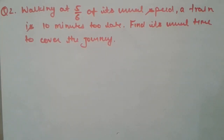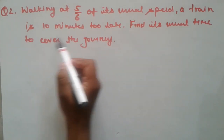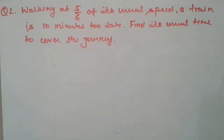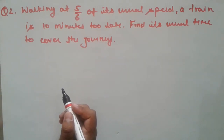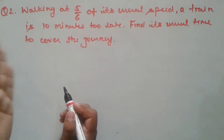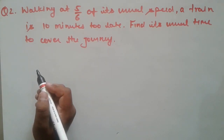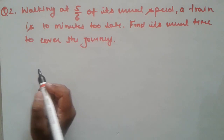Here is the second question. Walking at 5/6 of its usual speed, a train is 10 minutes too late. Find its usual time to cover the journey. When the train travels at 5/6 of its usual speed, it is 10 minutes late. We have to find the usual time taken by the train.